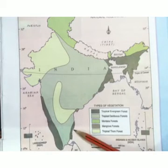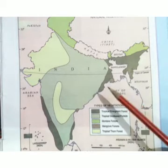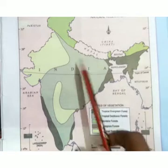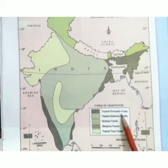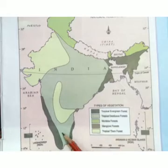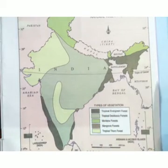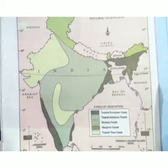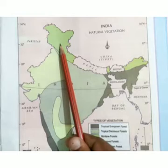The eastern coastal area and West Bengal are covered with tropical evergreen forest. Most of our country is covered with tropical deciduous forest. Mountain forest is found in the mountainous region and also in the eastern part.